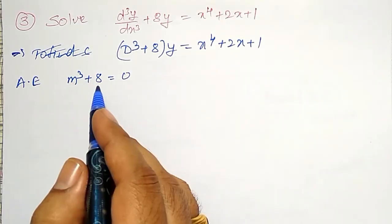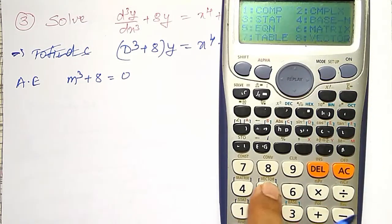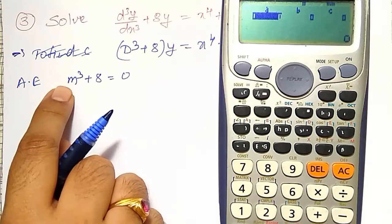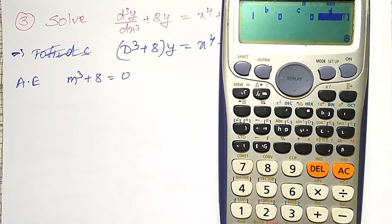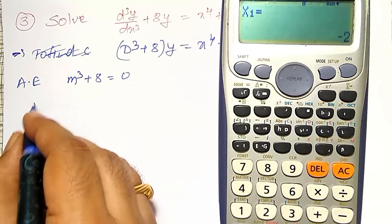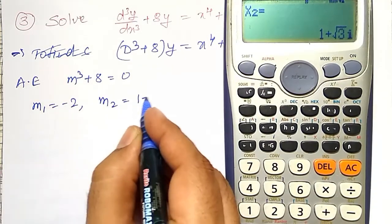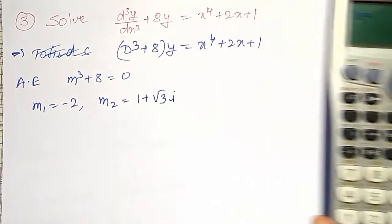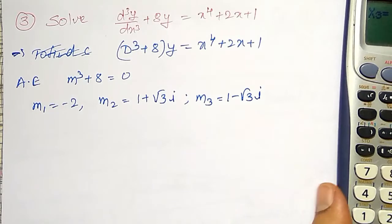Therefore the three roots of this equation I have to calculate. I will use a calculator directly — equation mode, option number 5, and option number 4 is for a cubic equation. I will substitute the coefficients: A is the coefficient of m³ that is 1, m² coefficient is 0, m coefficient is also 0, and the constant term is 8. Therefore I get the roots: m₁ = −2, m₂ = 1 + √3 i, and m₃ = 1 − √3 i.